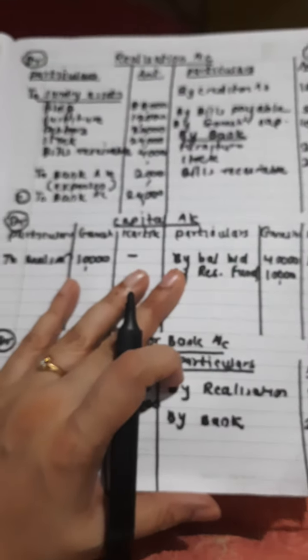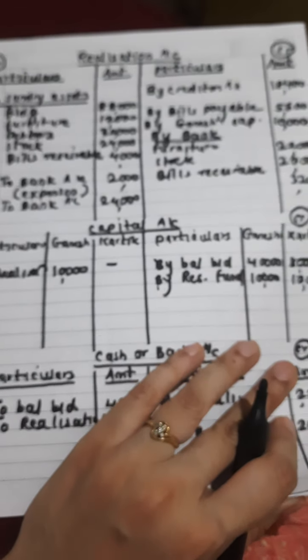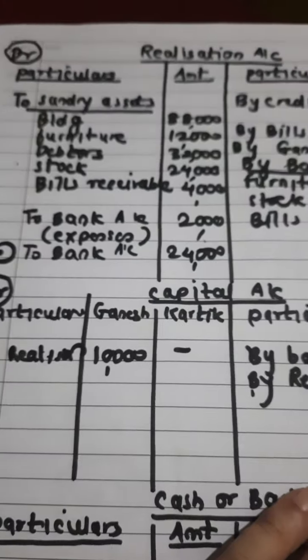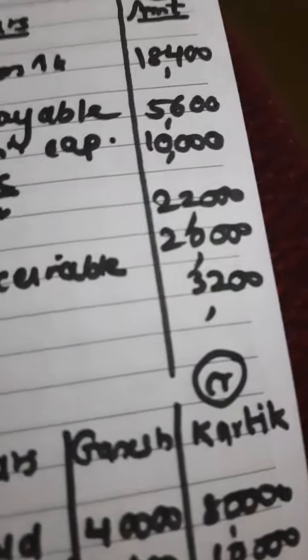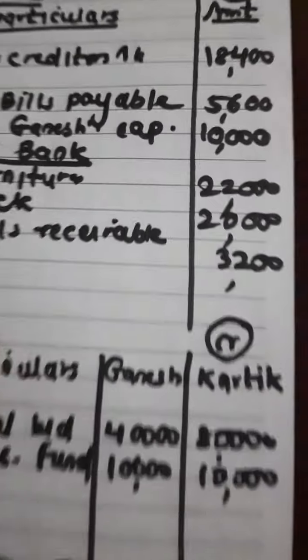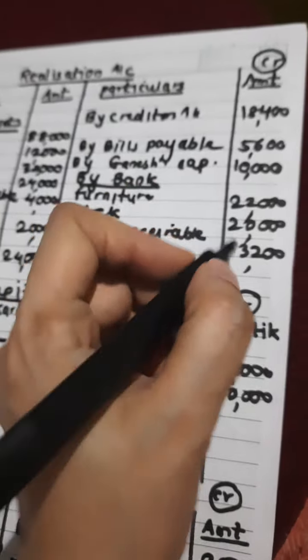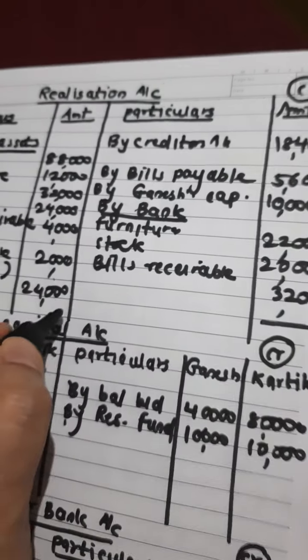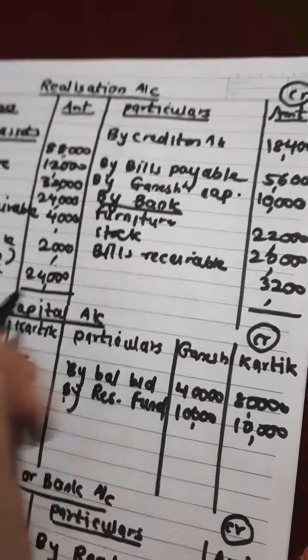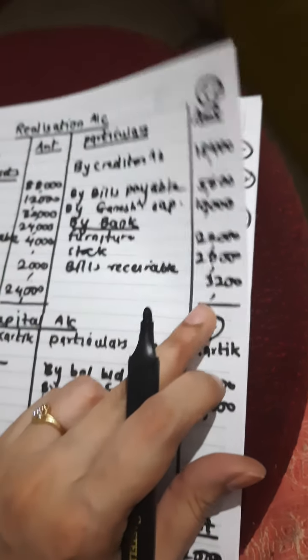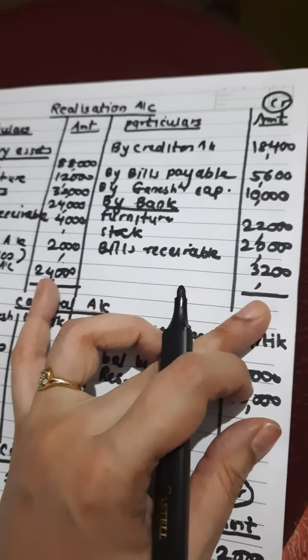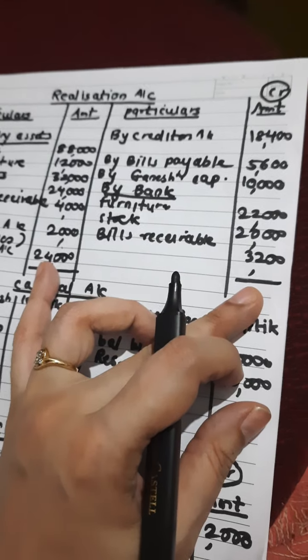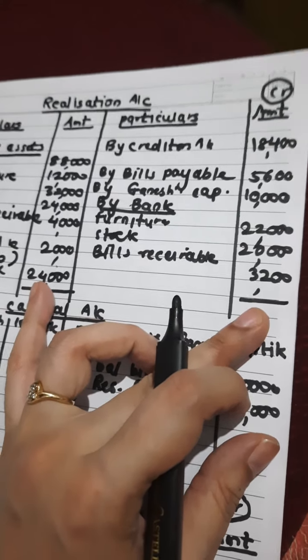Now my posting is over. First of all we will find the credit side total, afterwards the debit side total, and then we will subtract the smaller from the greater side — whichever is greater, we subtract to find the balance.